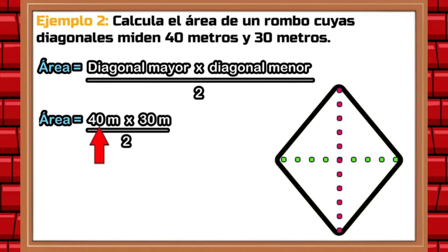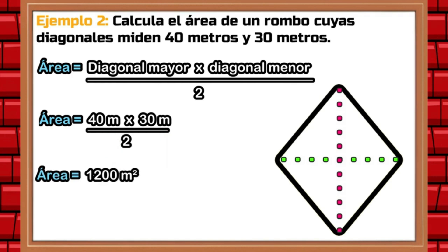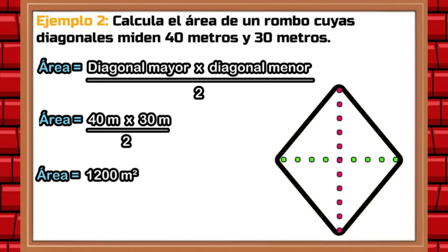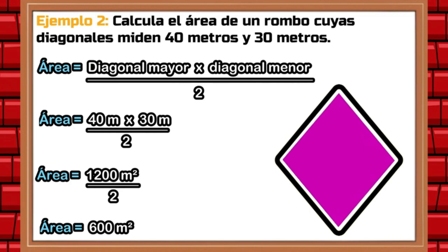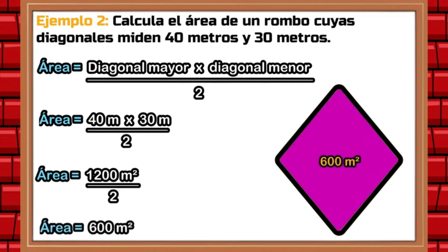First, we multiply 40 by 30, which gives us a product of 1,200. Next, we multiply meter by meter, which is equal to a square meter. In other words, the result is 1,200 square meters. Next, we divide by two. Dividing 1,200 by two gives us 600. The area of the rhombus is equal to a total of 600 square meters.